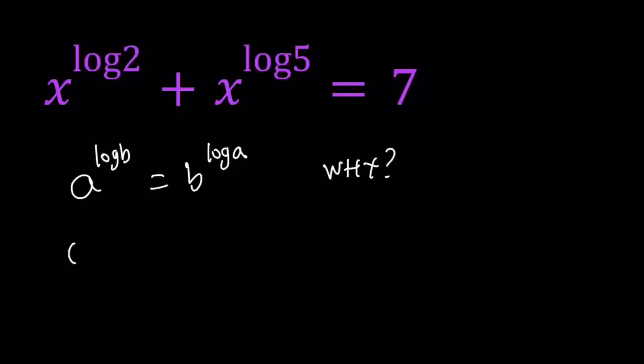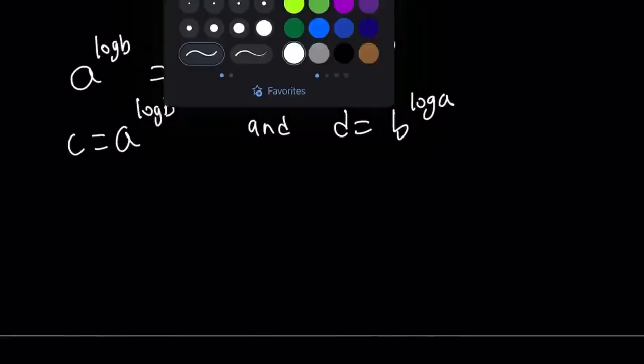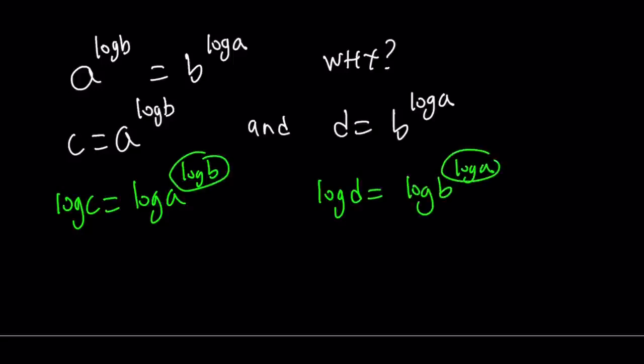Let's set the first one to c, so a to the power log b equals c, and d equals b to the power log a. We're going to prove that c and d are equal. I'm going to log both sides. Log c is log a to the power log b, and log d equals log b to the power log a.